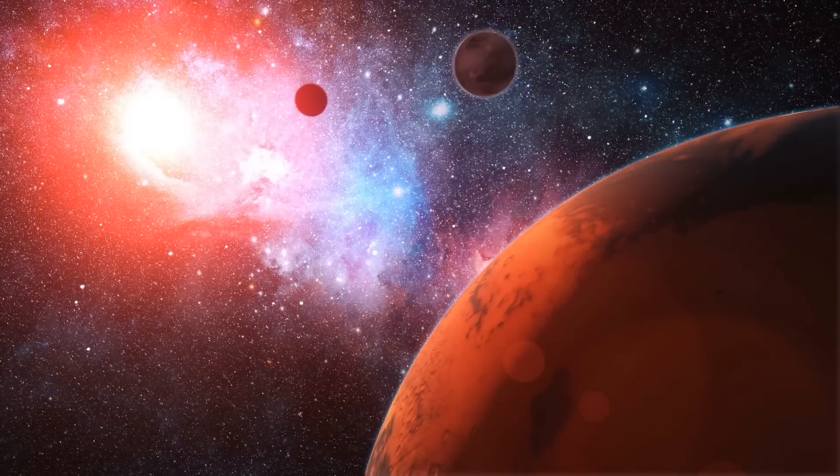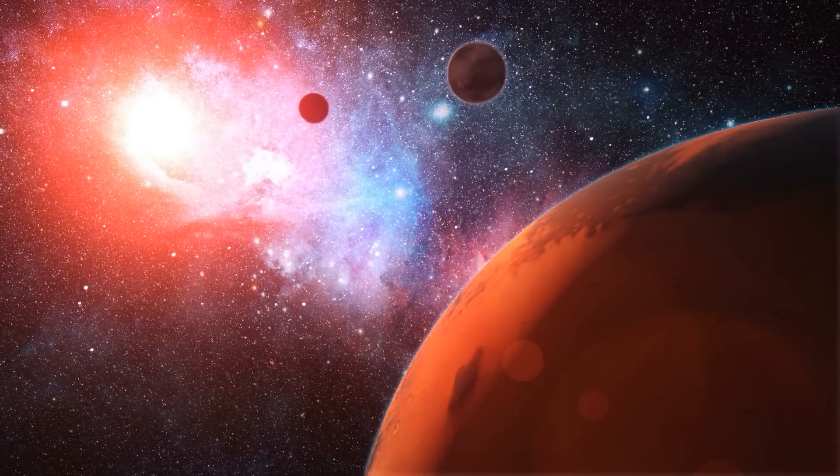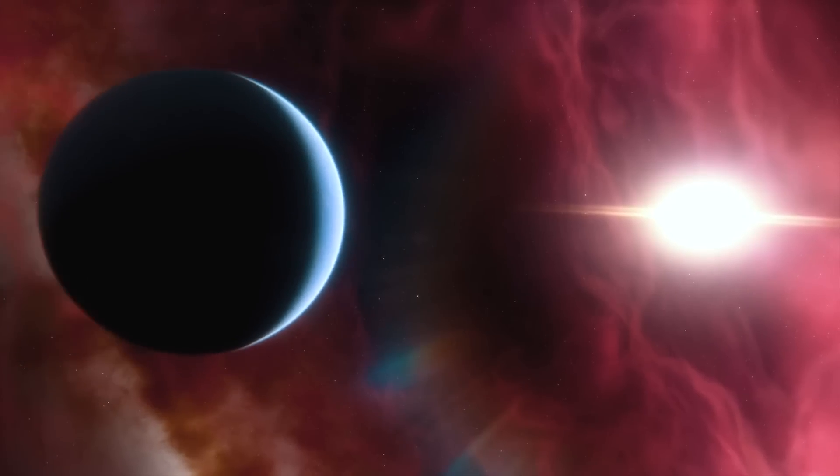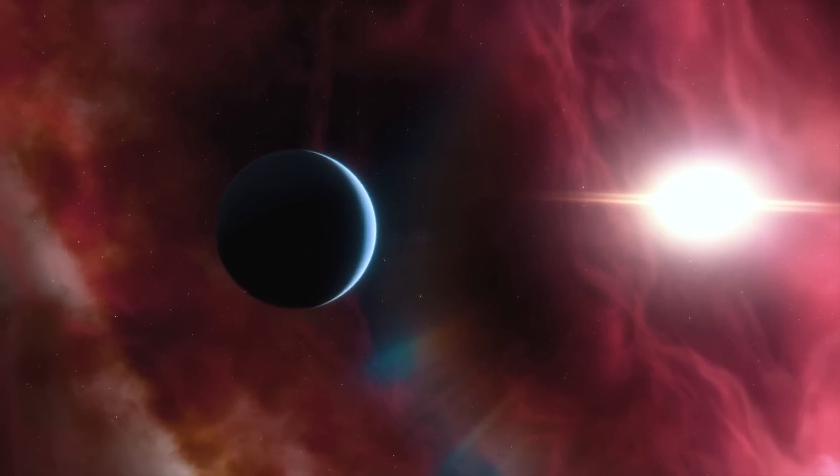If the exoplanets were the reason for the dimming, they would all have to be about the same size and orbiting their star in very tight orbits at virtually the same time.